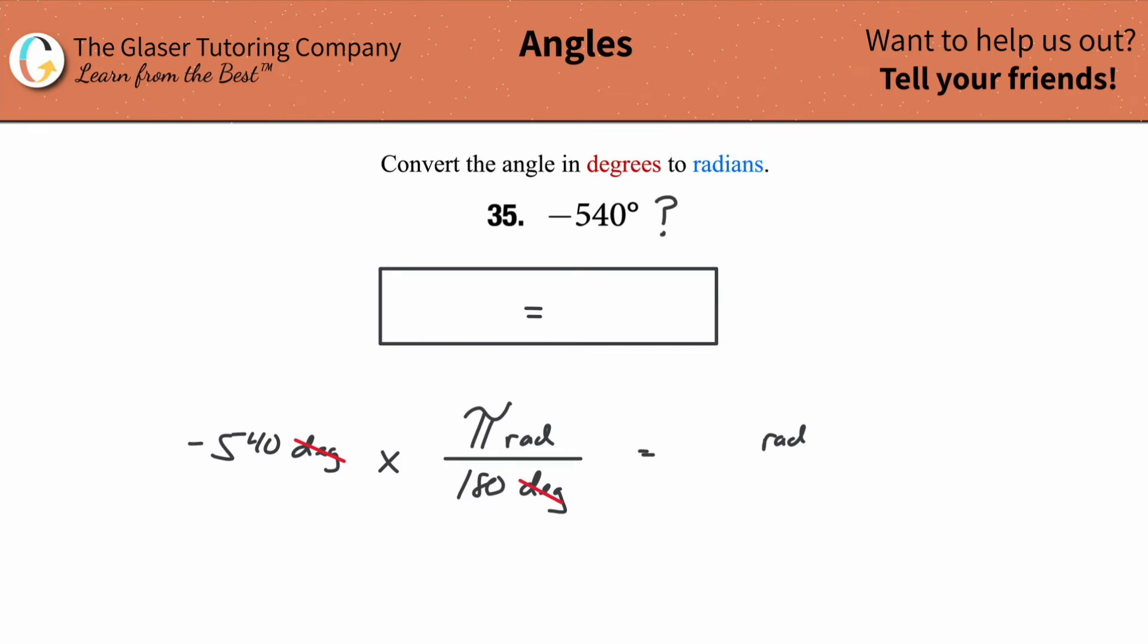So now what we can do is start simplifying. We want to try to find how many times 180 goes into 540. You can start reducing that if you like. It turns out that it goes in about three times. So in other words, this problem literally works out to be negative three times pi radians.